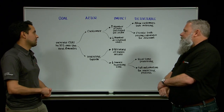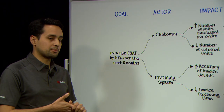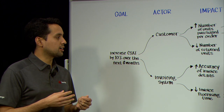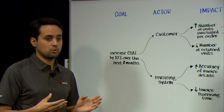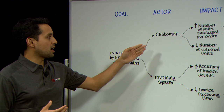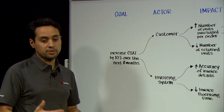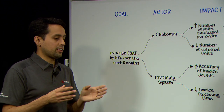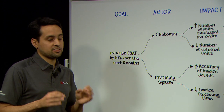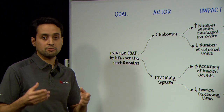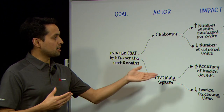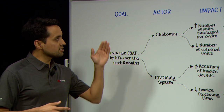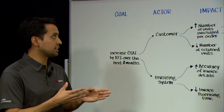Moving on into impacts — we have these actors, but we need to change some behavior they are having. Usually they are doing things that they think are not good enough, or there are pain points they want to resolve. In this case, from the customer actor, we are talking about increasing the number of units purchased per order — the customer feedback tells us there is a pain point there. And a second example is reducing the number of return units, because that is bad for the business. And there are also impacts related to the invoicing system. You always need to be sure that you're thinking about a desired state.